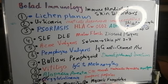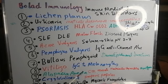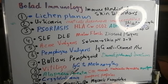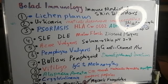In alopecia areata, which is an immune-mediated skin disorder, cell-mediated immunity is involved. It is due to accumulation or infiltration of cells surrounding the pulp and the hair follicle, leading to loss of hair and alopecia. Alopecia areata may be associated with some autoimmune disorders, such as Hashimoto's thyroiditis and myasthenia gravis.